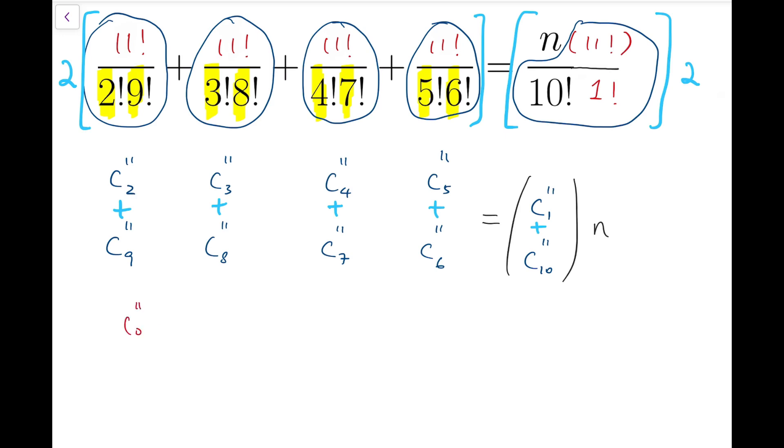So now we'll have these terms at the left-hand side. The sum of all binomial coefficients of the form 11 choose r. And the three dots actually represents exactly these eight terms. And for the right-hand side, then we'll now have n times (11 choose 1 plus 11 choose 10) plus the remaining four terms.